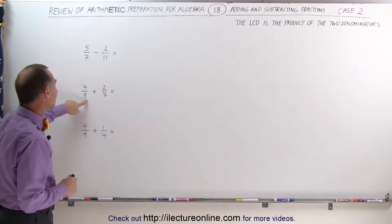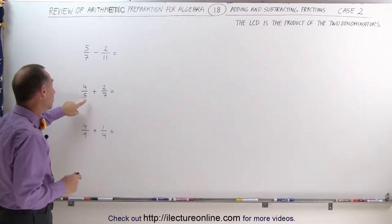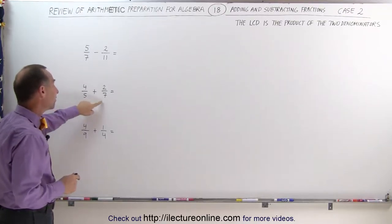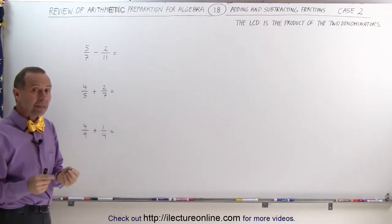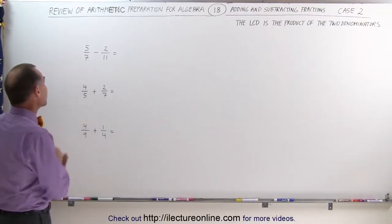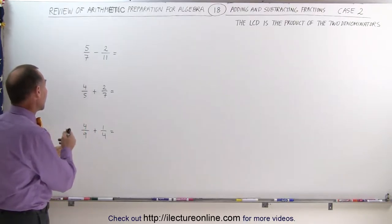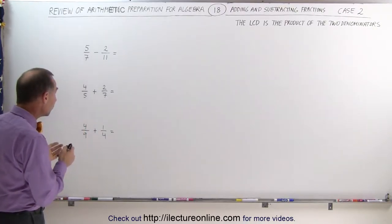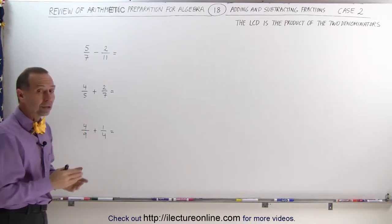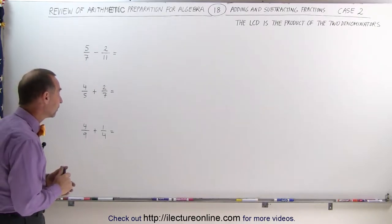In the second example, both five and seven are also prime numbers, which means that the lowest common denominator here is also going to be the product of the two denominators.